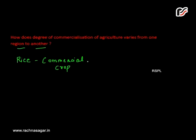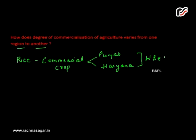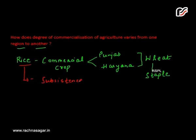Rice is a commercial crop in the states of Punjab and Haryana. This is because wheat is mainly grown there — wheat becomes the staple food crop of Punjab and Haryana. So rice is used for commercial purposes in those states, while wheat is their staple food.